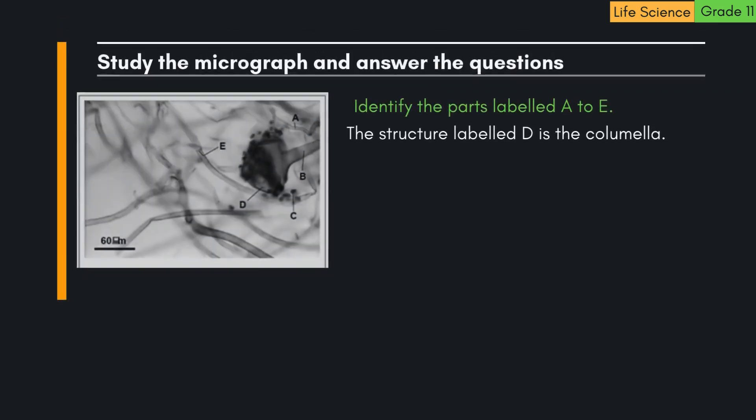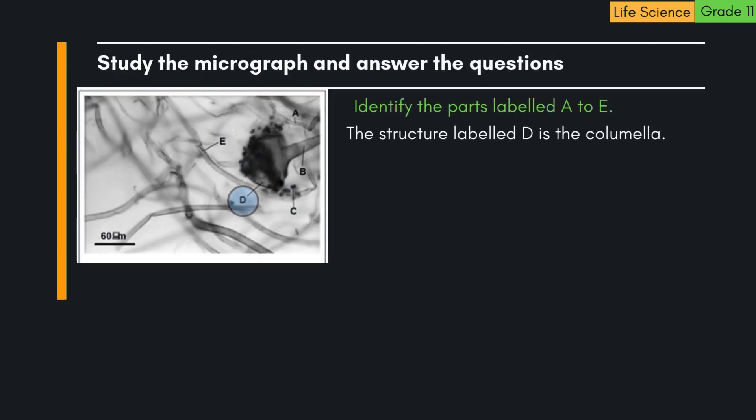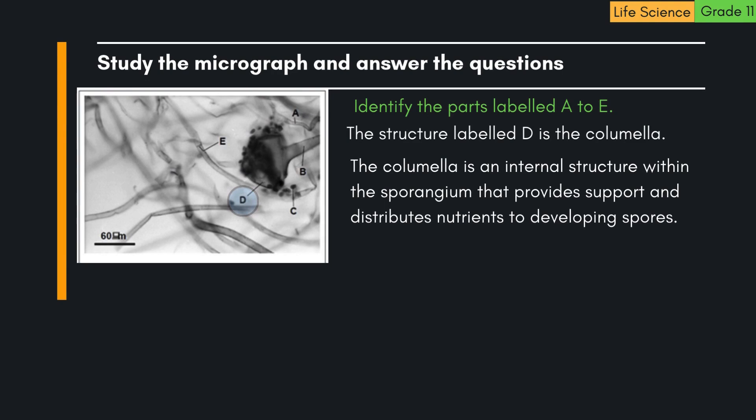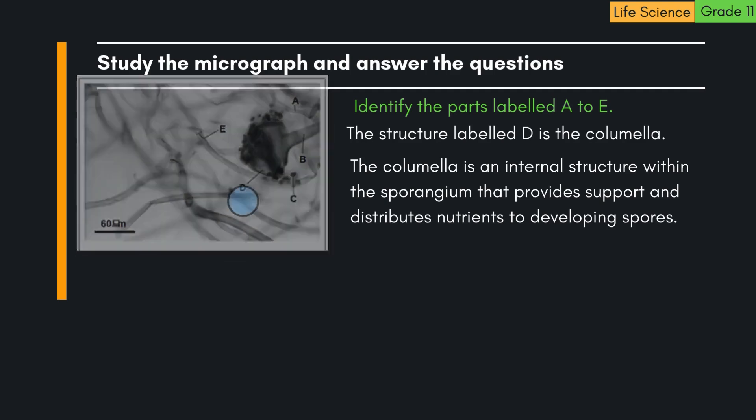4. The structure labelled D is the collumella. The collumella is an internal structure within the sporangium that provides support and distributes nutrients to developing spores.